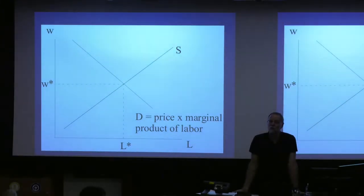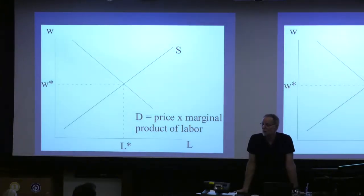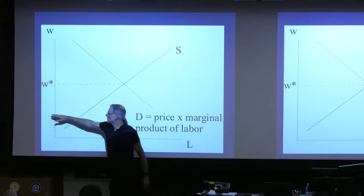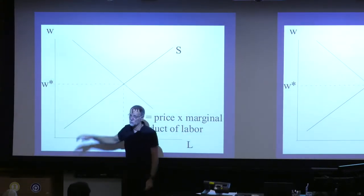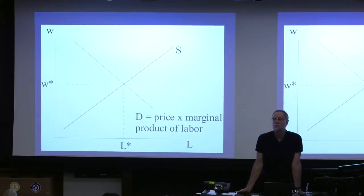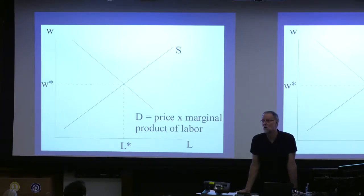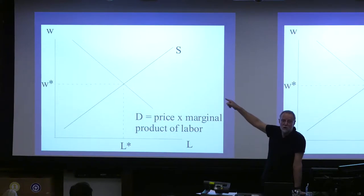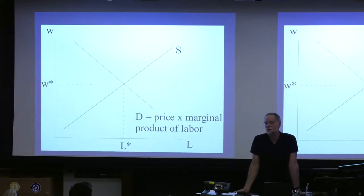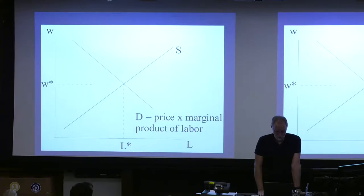The supply curve is just a schedule representing the reservation wages of the workers — at a wage of a certain amount, how many hours would workers want to work in total? I've drawn it to be upward sloping, though it might be completely vertical or even backward bending, as some aggregate labor supply curves appear to be. If we're talking about the supply curve to one particular small market, probably it's upward sloping, because if wages went up there but not in other markets, people would switch from other markets to offer their services in this one.